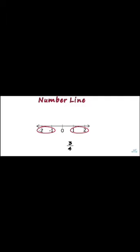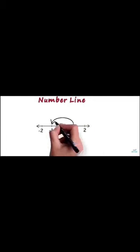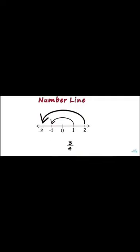Every integer except 0 has a corresponding integer. The integer 1 has minus 1 as its corresponding integer. The integer 2 has minus 2 as its corresponding integer. Similarly, every negative integer will have a corresponding positive integer. This tells us that if we somehow manage to plot 3 by 4, we can mark a point at the same distance on the left-hand side of 0, which is minus 3 by 4.